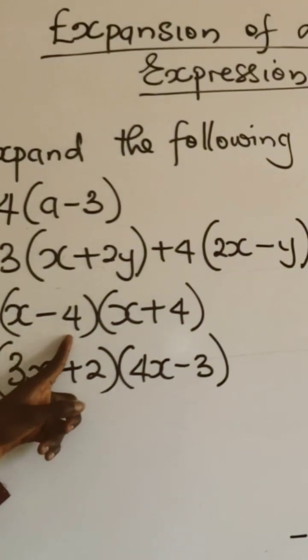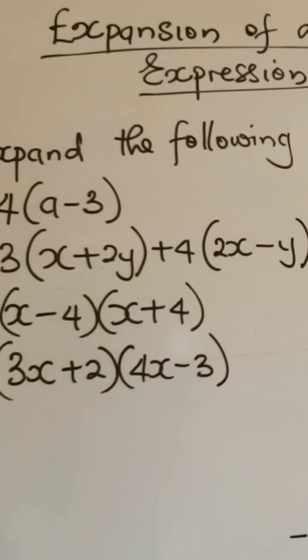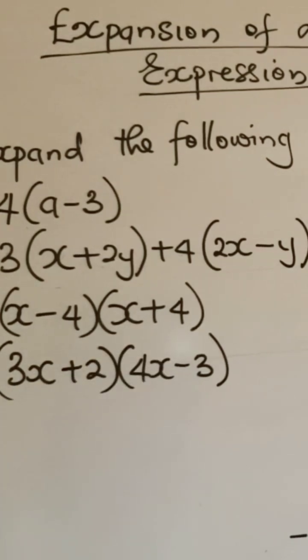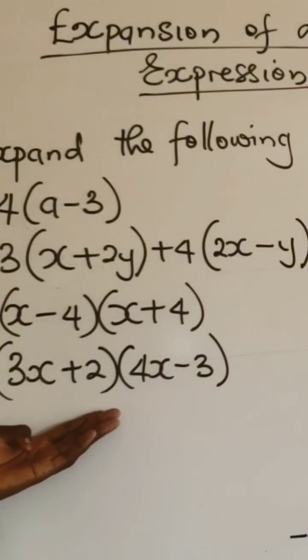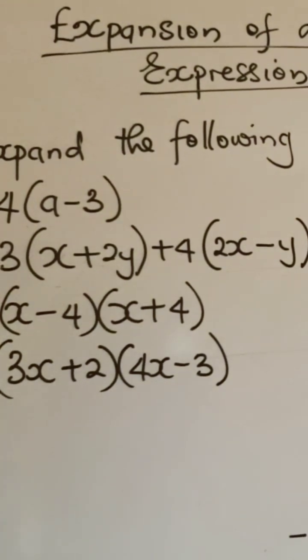3. (x-4)(x+4). The last but not the least is (3x+2)(4x-3). Solution.